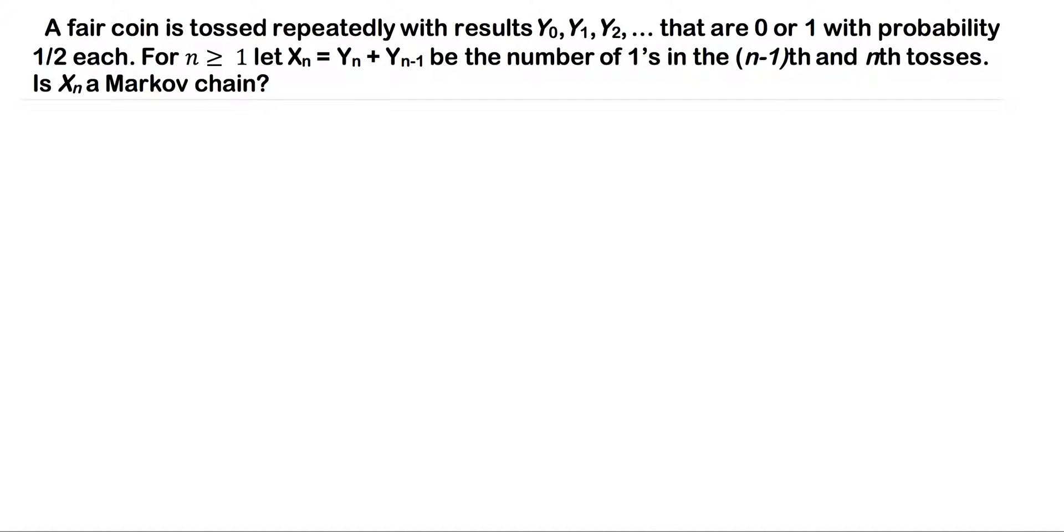Let's consider what a Markov chain is. The Markov property states that given the current state, any other information about the past is irrelevant for predicting xn+1. If we're given xn, that's all we need to predict xn+1. We're going to compute some probabilities to show that xn is actually not a Markov chain and is dependent on more than one past occurrence.